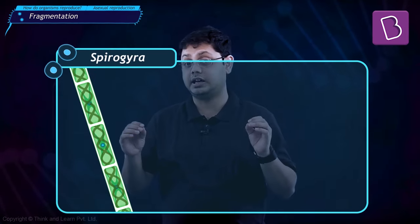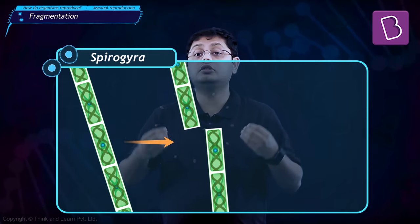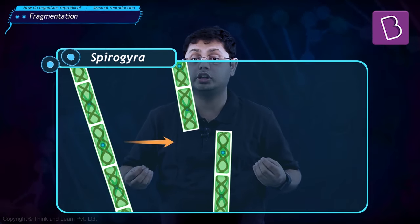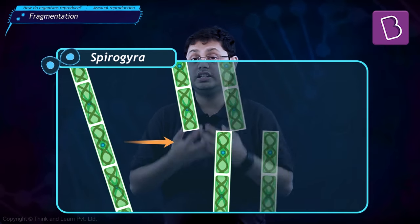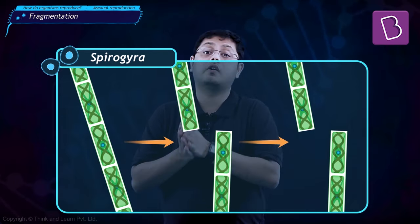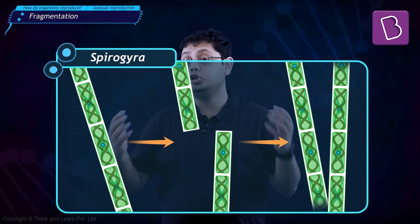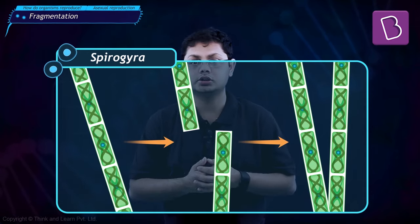Spirogyra, for example, simply breaks up into small pieces upon maturation. These pieces or fragments grow into new individuals.